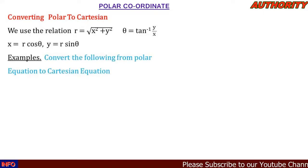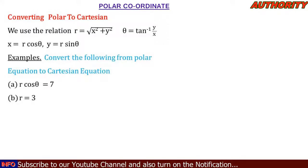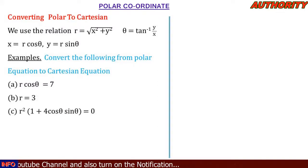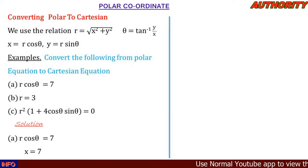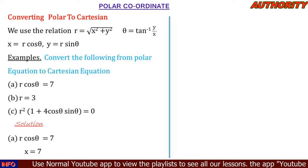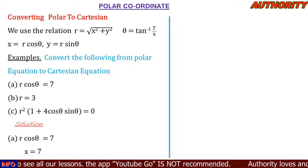Convert the following polar equations to Cartesian form: (1) r·cosθ = 7, (2) r = 3, (3) r²(1 + 4cosθ·sinθ) = 0. For number one, r·cosθ = 7: since x = r·cosθ, we simply replace r·cosθ with x, giving x = 7.